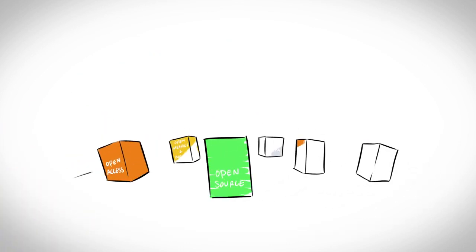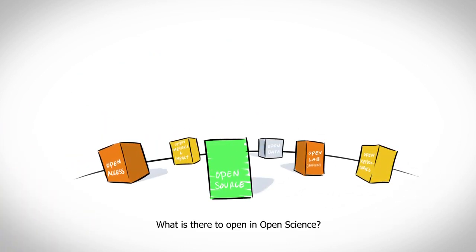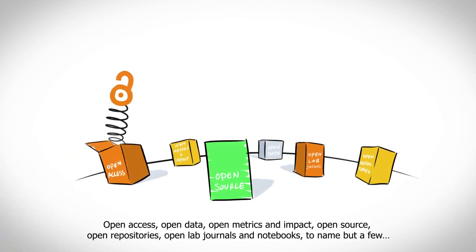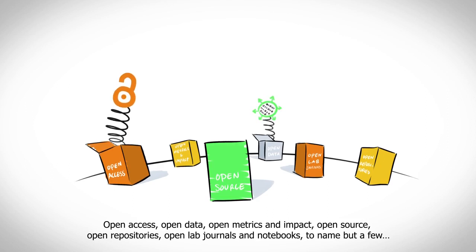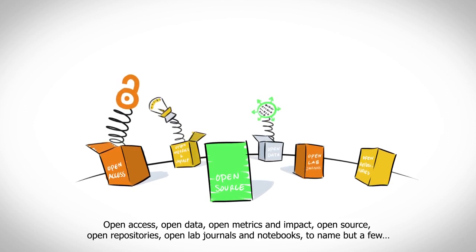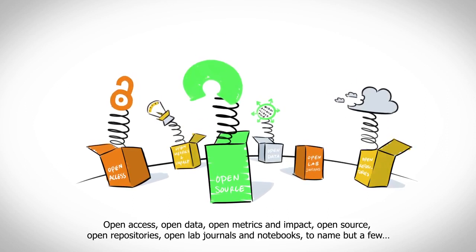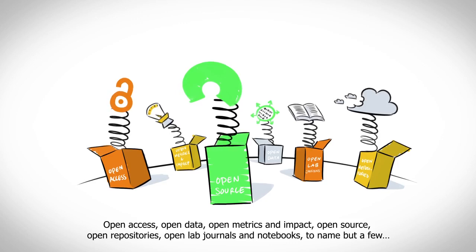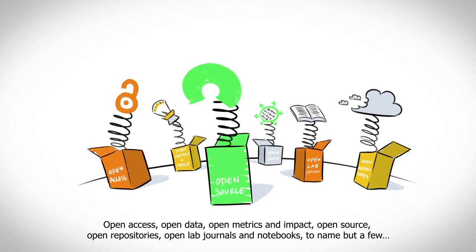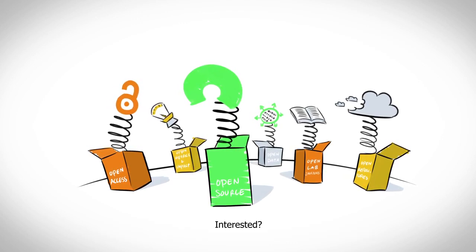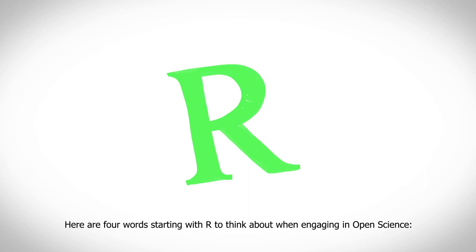What is there to open in open science? Open access, open data, open metrics and impact, open source, open repositories, open lab journals and notebooks — to name but a few. Here are four words starting with R to think about when engaging in open science.